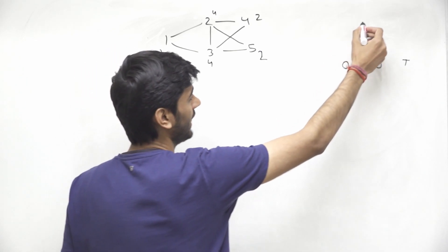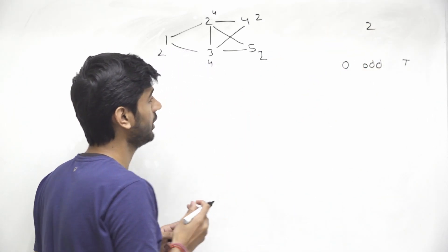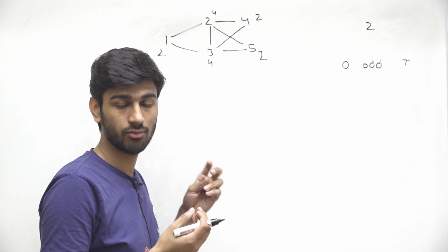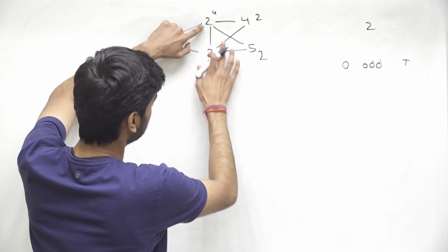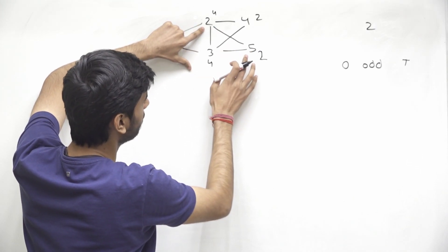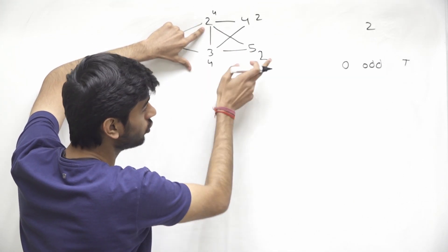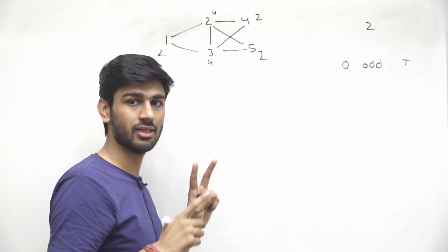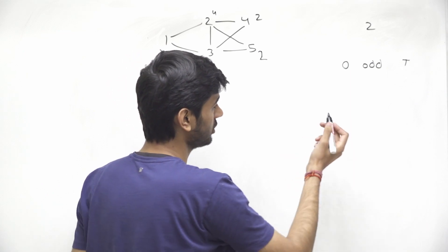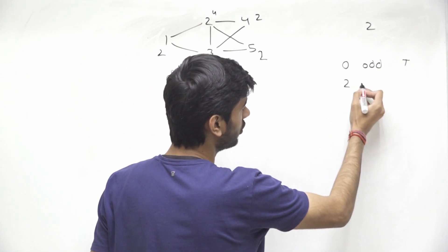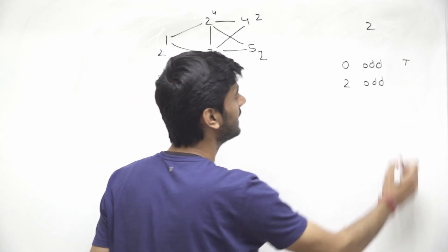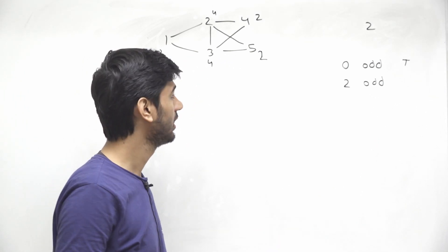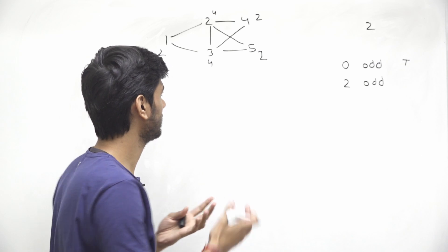We are allowed to add at most 2 edges. If we add one edge, it will change the degree for 2 nodes. For example, we used 1 edge to connect nodes 2 and 5, and it changed the degree for those 2 nodes. So if we have 2 nodes having odd degree, using 1 edge we can try to change their degree, but it will not be possible in all cases.